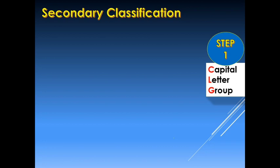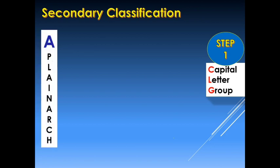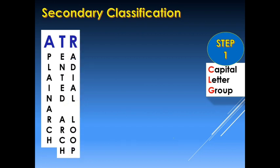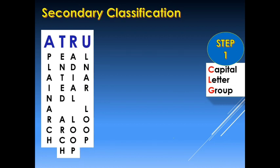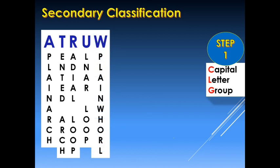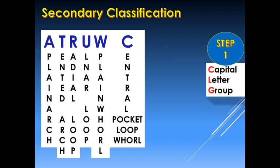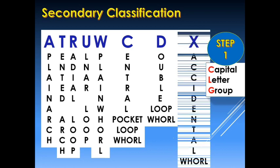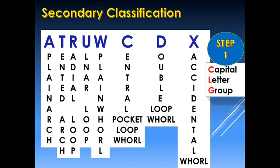In the capital letter group we use the ATRO CDX system: capital letter A for a plain arch, capital letter R for a radial loop, capital letter U for the ulnar loop, capital letter W for a plain whorl, capital letter C for central pocket loop whorl, capital letter D for double loop whorl, and capital letter X for the accidental whorl.